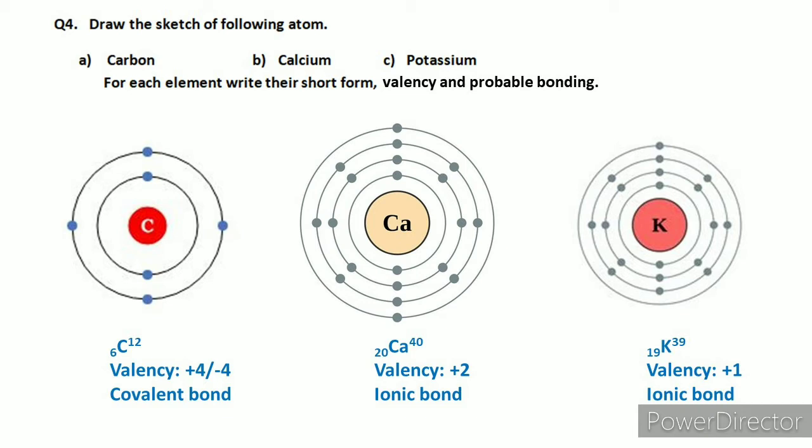Remaining electrons are four, so we make a second shell. The second shell has a maximum of eight, but since carbon only has four remaining electrons, we place four electrons in the second shell. This completes the sketch of carbon.